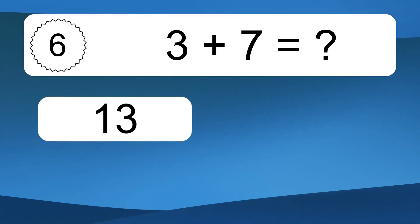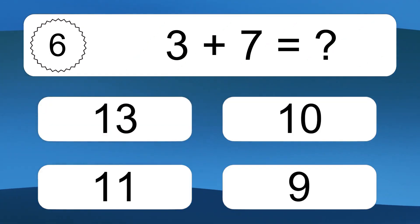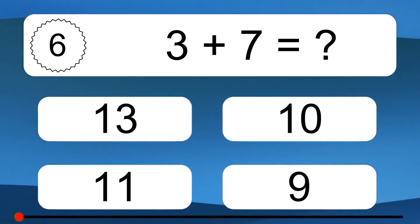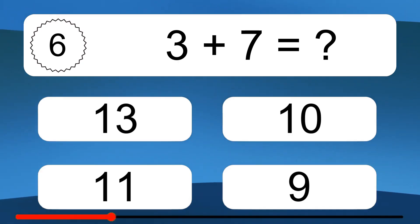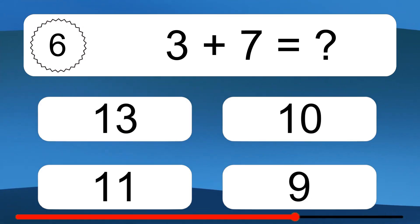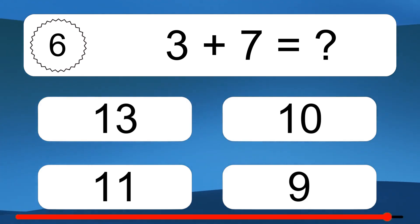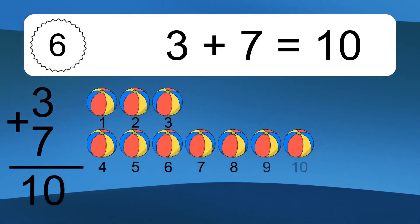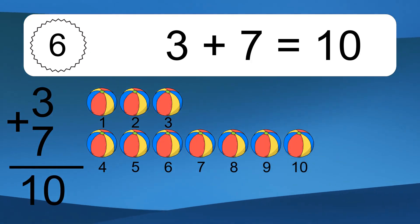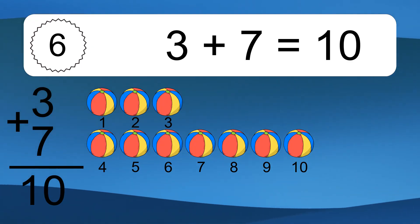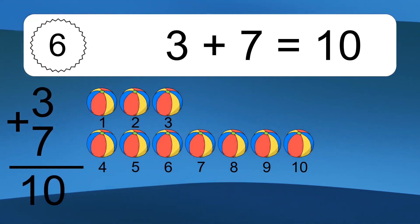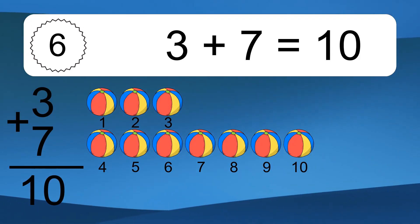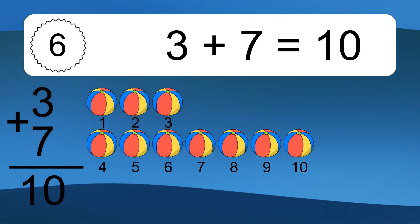3 plus 7 equals what? 3 plus 7 equals 10. Let's count it: 1, 2, 3, 4, 5, 6, 7, 8, 9, 10.